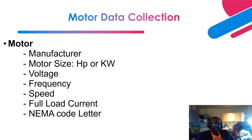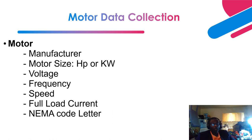For motors, in most industrial facilities there are many large motors. For Arc Flash studies, motors greater than 50 horsepower are important to model; motors below 50 horsepower can generally be ignored. For motors greater than 50 horsepower, you need the manufacturer, motor size (horsepower or kilowatts), voltage, frequency, speed, full load current, and the NEMA code letter. The NEMA code letter provides input to the locked rotor current. NEMA code letters include A, B, C, D, and E.